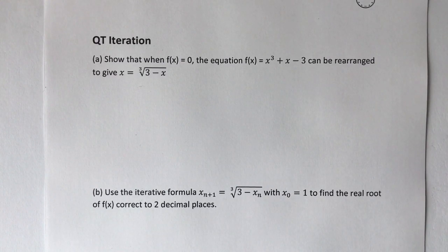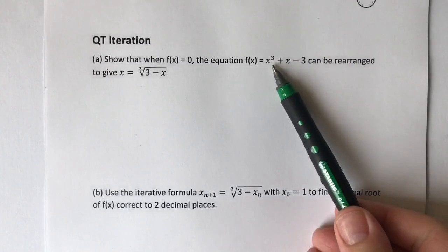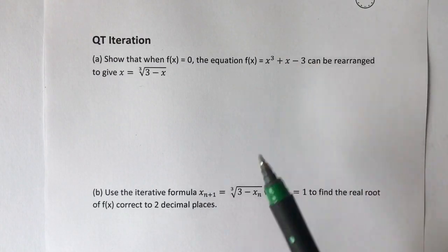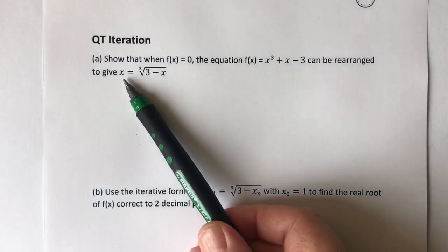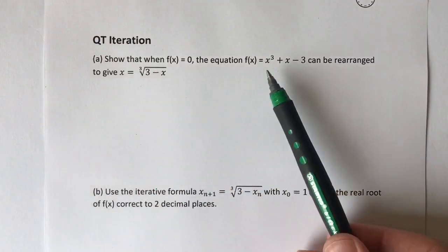These questions tend to be quite wordy. It says show that when f(x) equals zero, the equation can be arranged to give that. Basically, all we're doing is making one of these x's—we've got this x cubed thing here—the subject of the formula. So we're just rearranging.